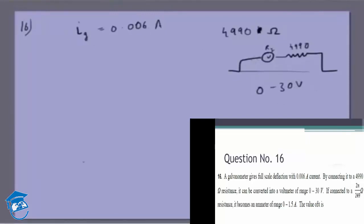Which means at 30 volts the deflection is 0.006 amperes. It can't go further than that. That means 30 volt is equal to 0.006 amperes multiplied by the resistance which is 4990 plus R_g where they are in series.